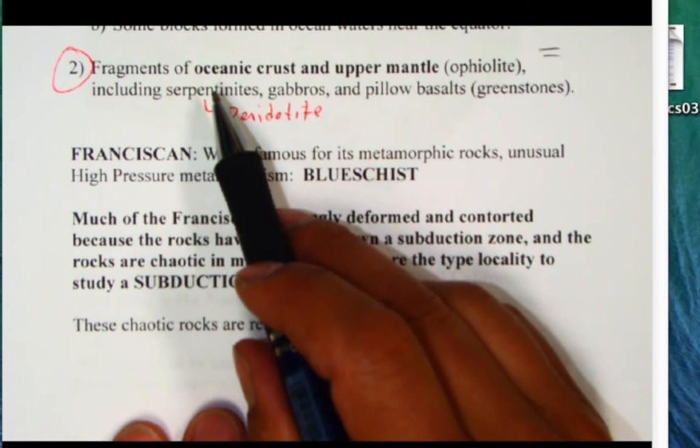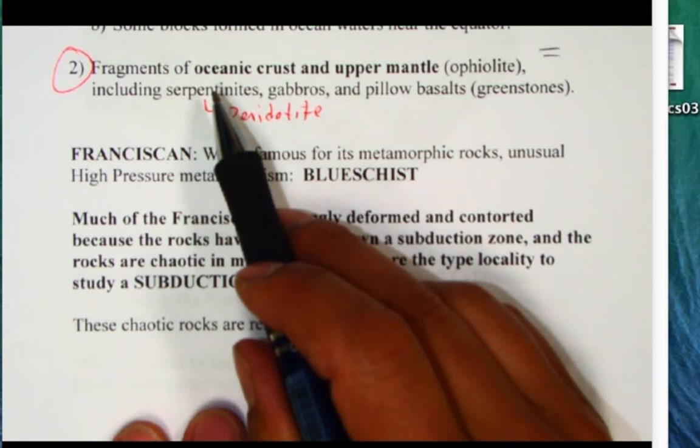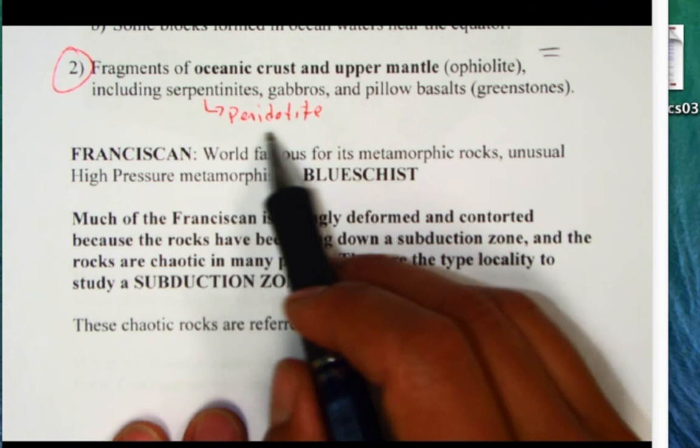One of the more important features is the California state rock serpentinite and really the protolith of serpentinite is this mantle peridotite but also there's gabbros, there's pillow basalts.